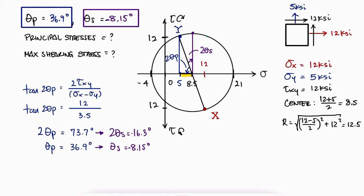This means that by looking at a rotated element 36.9 degrees counter-clockwise, the new sigma y is the minus 4 principal stress.